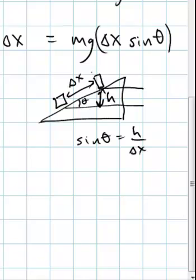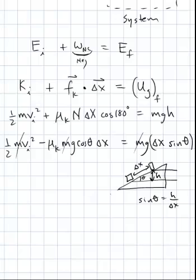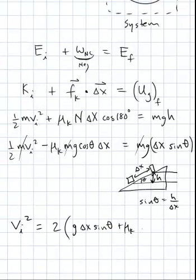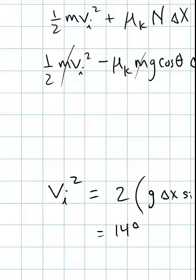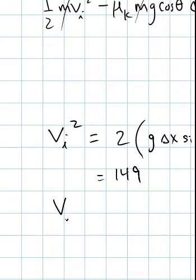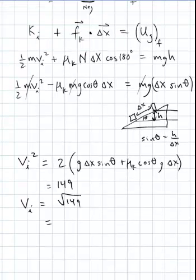Okay, so we can see that every one of these terms has a mass in it. So we can cancel the mass out, which is good because it was not given to us. And we know that our v_initial is going to be 2 times g Δx sine θ plus μ_k times cosine sine θ, times g, times Δx. And what do I get? I get 149, and that's v squared, remember? So v_initial is the square root of 149, 12.2 meters per second.